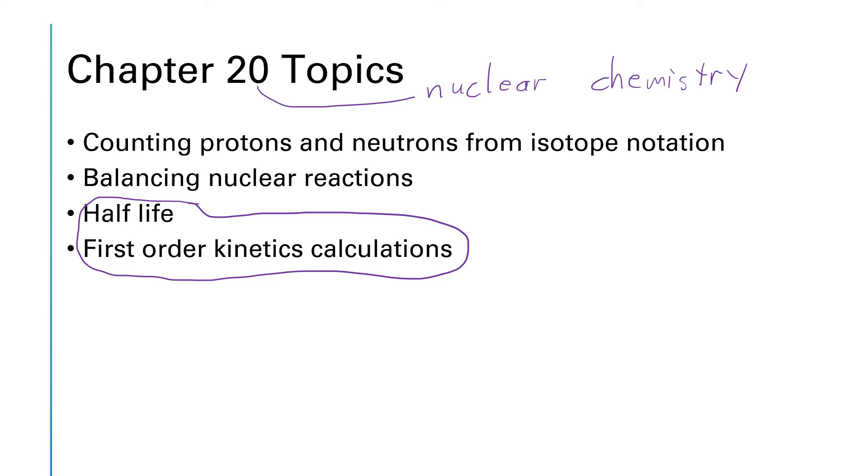And so we are segueing into chapter 20 to have a concrete example of kinetics calculations. With nuclear chemistry, instead of talking about k's, we usually talk about half-lives, but remember that there's that relationship that the half-life is equal to the natural log of 2 over k. Or we can rearrange that equation to say that k is equal to the natural log of 2 over the half-life.